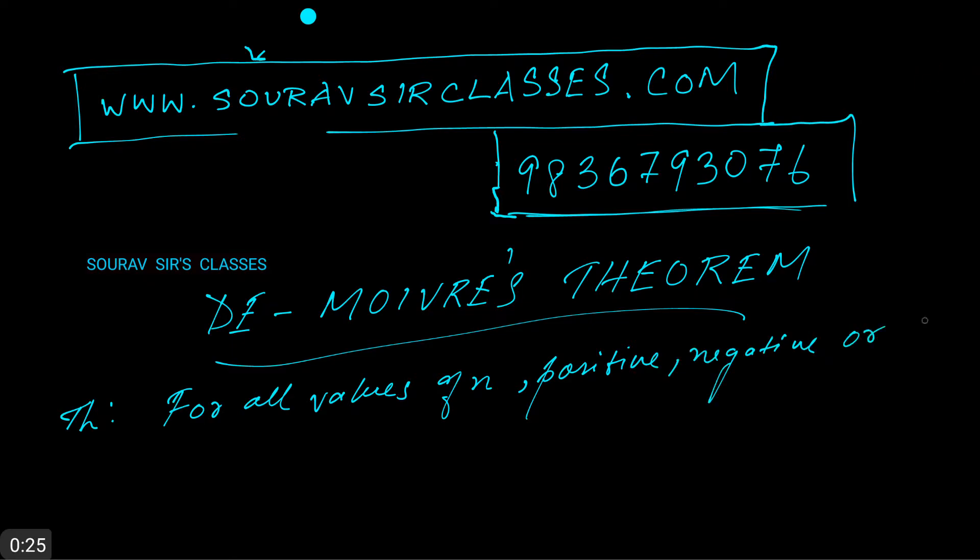or rational—the value of (cos θ + i sin θ)^n is equal to (cos nθ